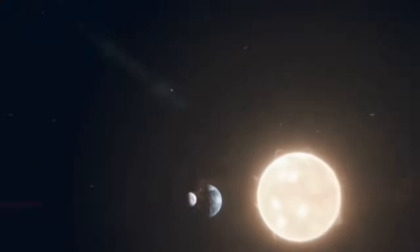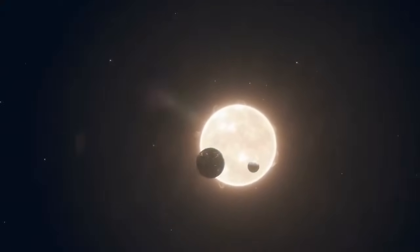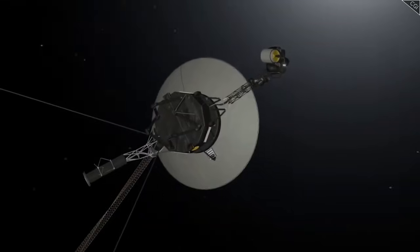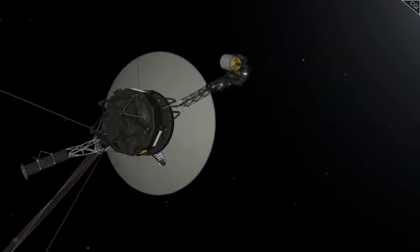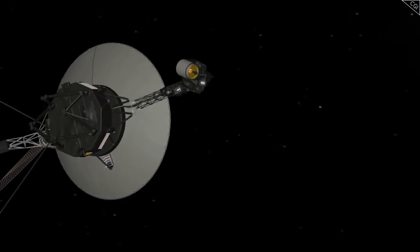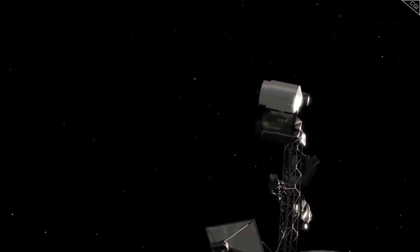But what exactly happened as the Voyager spacecraft crossed the edge of the solar system? Could we truly be trapped in a massive space bubble? And how does this discovery reshape our understanding of the solar system's dynamics? Let's dive in to find out.